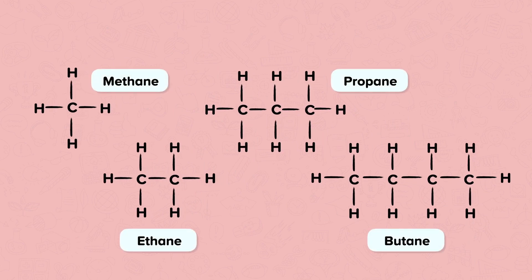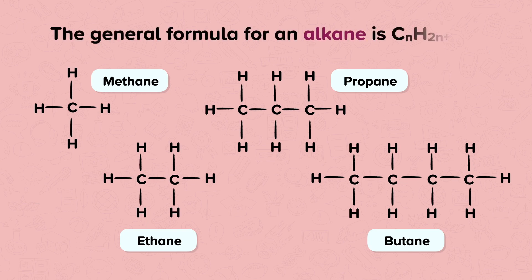Homologous series also share the same general formula. The general formula of an alkane is CnH2n+2, where n equals the number of carbon atoms in the compound. This means that members of the homologous series vary by the length of their carbon chain, so a CH2 group — one carbon and two hydrogen atoms — is added each time.